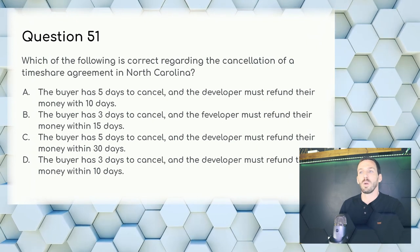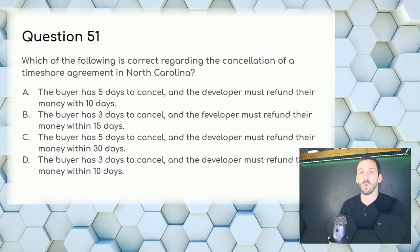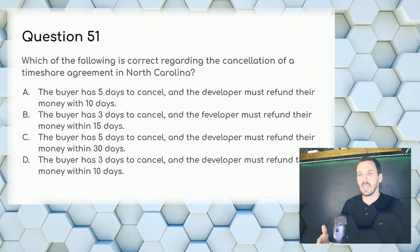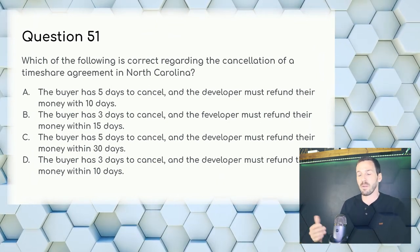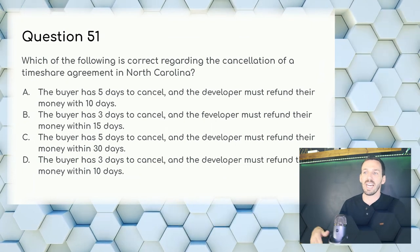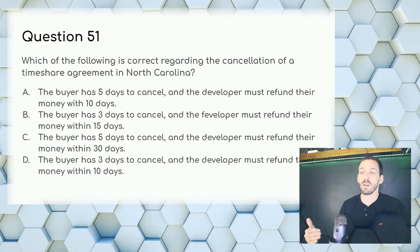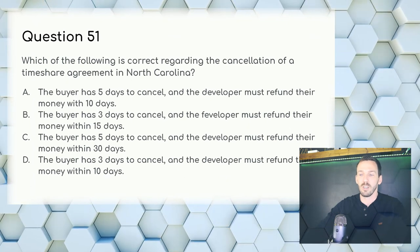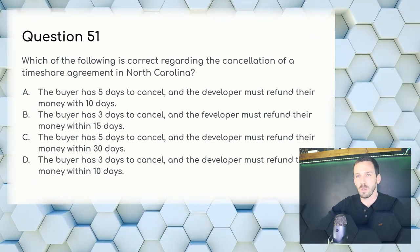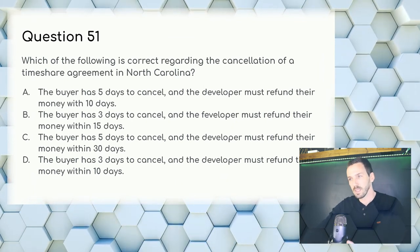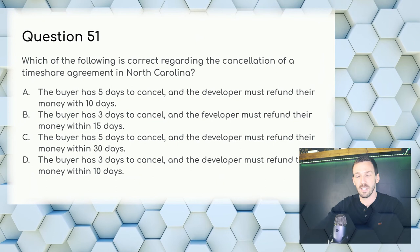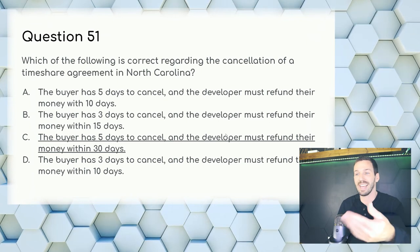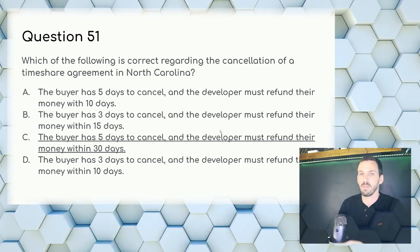Question 51: Which is correct regarding cancellation of a timeshare agreement in North Carolina? Timeshares have a five-for-five rule — almost everything involves the number five. We know it's five days, which cancels out B and D. Then we know the refund period must be 30 days. Answer: C — the buyer has five days to cancel and the developer must refund their money within 30 days.